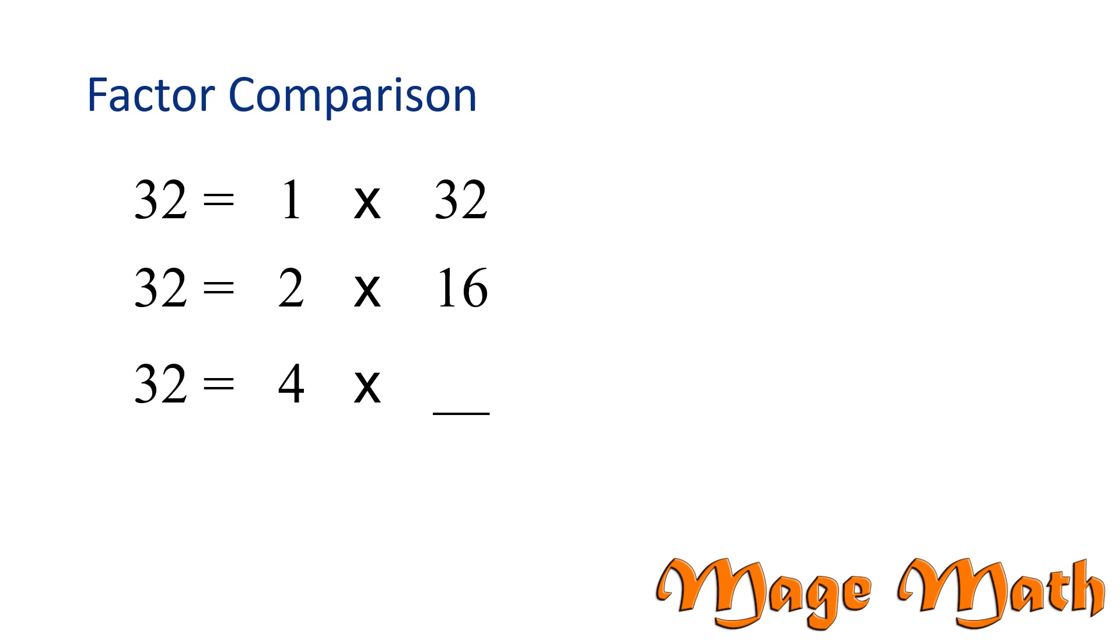We have a few ways to find the factor. We can divide 32 by 4, or we can think about what number times 4 is 32. That's right, 8. 4 times 8 is 32. So, 4 times 8 is a factor pair of 32. Are there any other factor pairs for 32 that are not listed yet? Nope, you're right. We found all the factor pairs of 32. Great job.